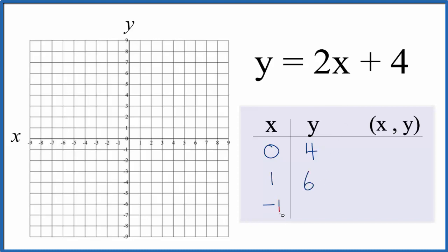And then let's just put a negative 1. Negative 1, so that's 2 times minus 1, that's minus 2, minus 2 plus 4 is 2. So these are the points that we'll graph.